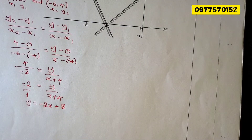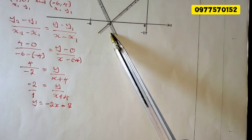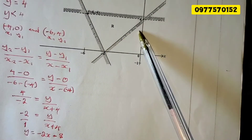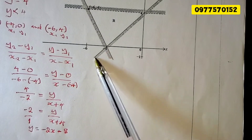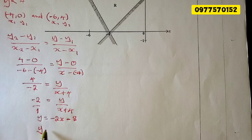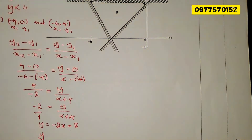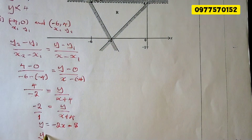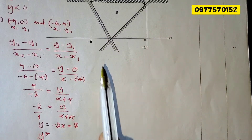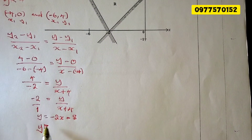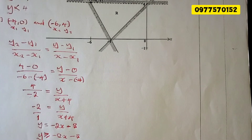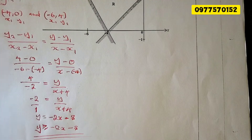Now we write the final answer as an inequality. The wanted region is on the greater-than side, and the unwanted is on the less-than side. The line is a solid line, so we include 'or equal to.' The second inequality is y ≥ −2x − 8.